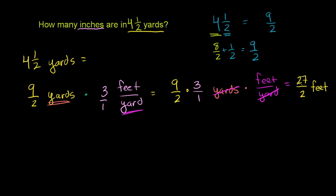The yards cancel out, and you are left with 9 times 3 is equal to 27 over 2 feet. So we figured out 4 and 1 half yards is 27 over 2 feet. And that makes sense, because we should have more feet than yards, and actually this should be 3 times more. So everything makes sense. This 27 over 2 is 3 times 9 over 2.